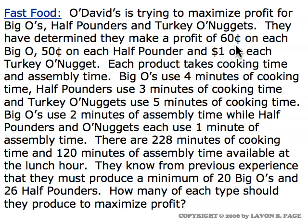They've determined they make a profit of sixty cents on each Big O, fifty cents on each Half Pounder, and a dollar on each Turkey O'Nugget. Each product takes cooking time and assembly time. We have information with regard to how much time it takes for each of those processes for all of their products.